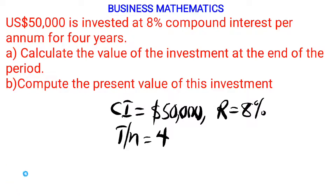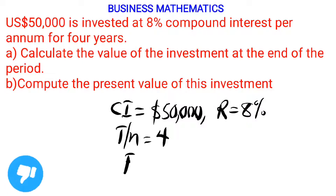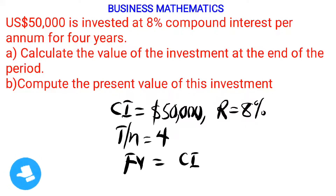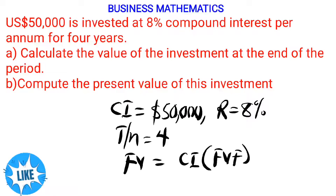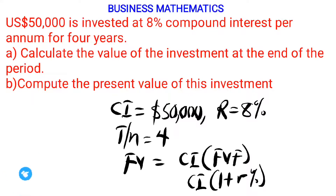So once we know that, we can move on to calculate the future value. By formula, the future value of this investment is the cost of the investment multiplied by the future value factor. The future value factor is 1 plus the rate raised to the power of N. That is the future value factor approach we are using here.